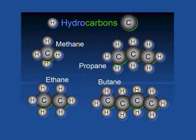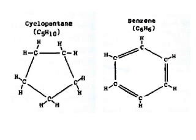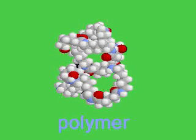Methane is one carbon with four hydrogen atoms. Two carbons plus six hydrogens is ethane; three carbons plus eight hydrogens is propane; four carbons plus ten hydrogens is butane, and so on. These straight-line molecules are called paraffinic molecules. Carbons can also form ring configurations — a five-carbon ring molecule is called cyclopentane, and a six-carbon molecule with three double bonds is called benzene. These are used in chemical reactions to make plastics and polymers.